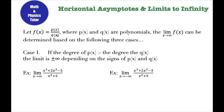The degree is the biggest exponent attached to a variable coefficient. If the degree of the numerator is greater than the degree of the denominator, then the limit is going to be positive or negative infinity depending on the signs in those two polynomials.